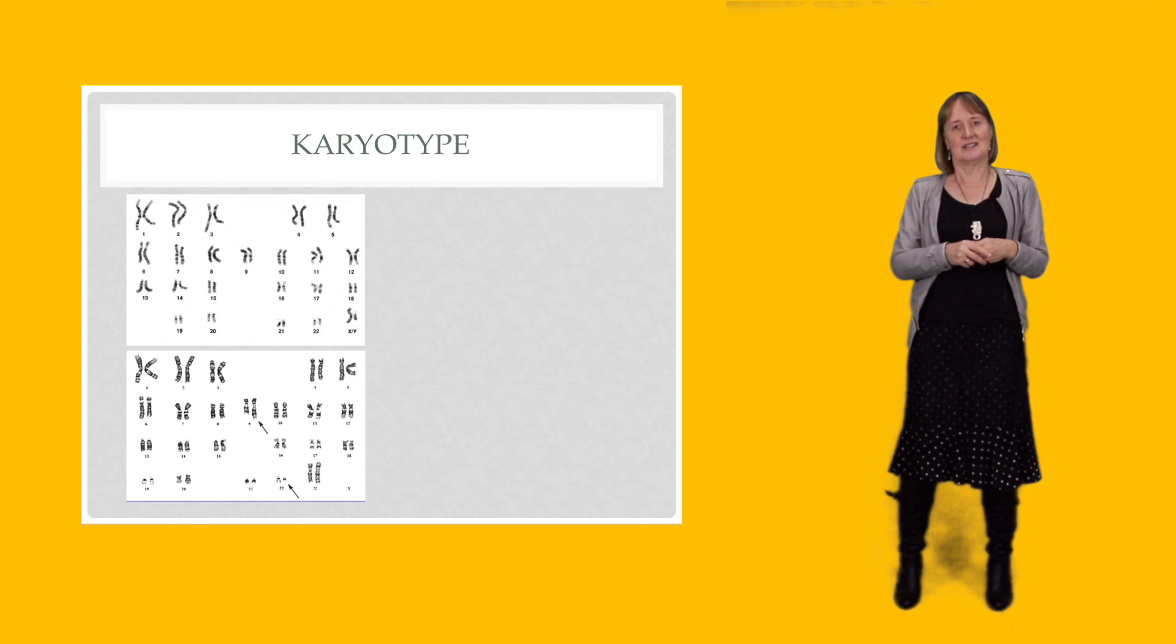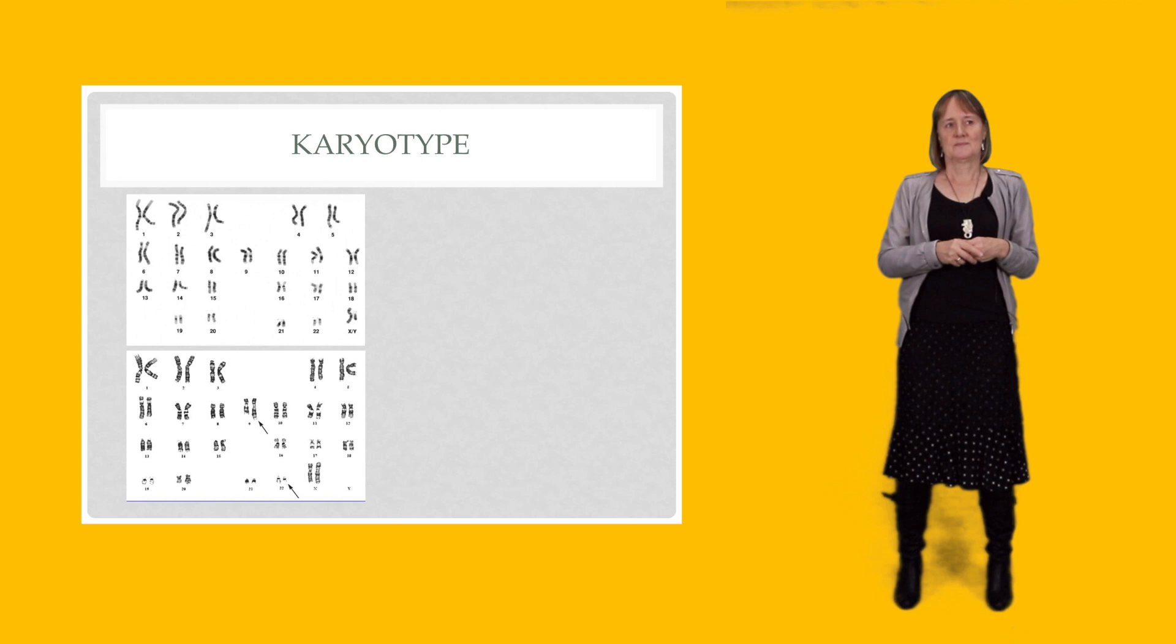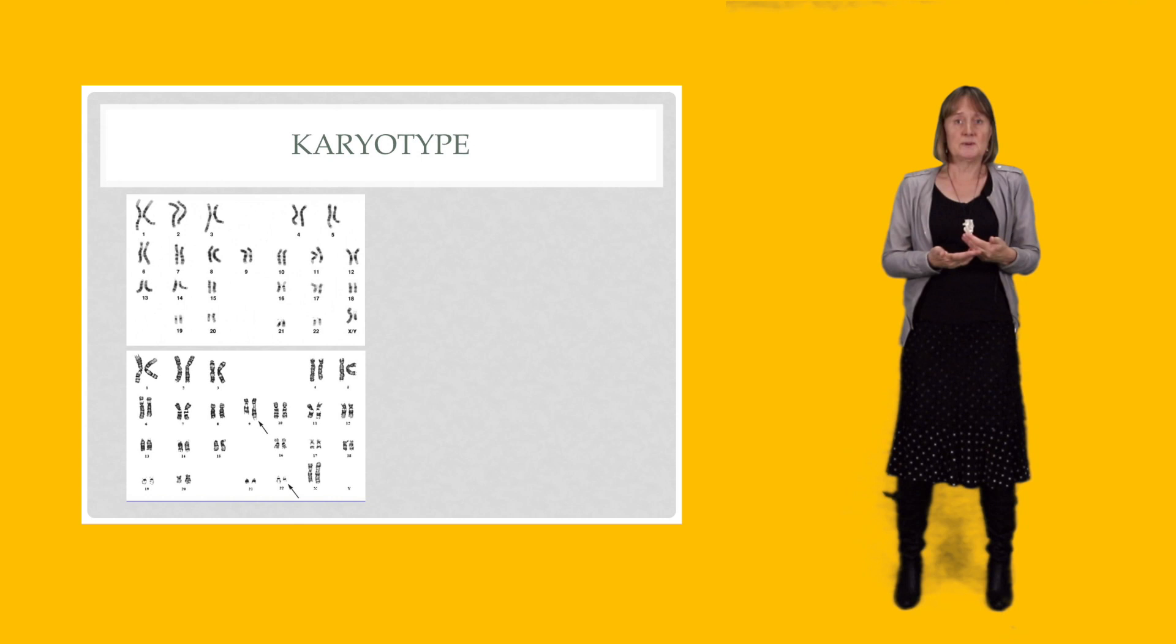And if it's a male, obviously it'll be XY, and a female will have two X's. So the top picture here is a normal karyotype and it's a man.